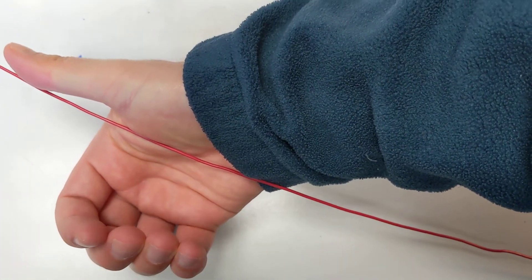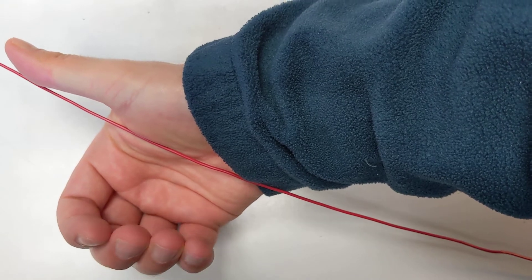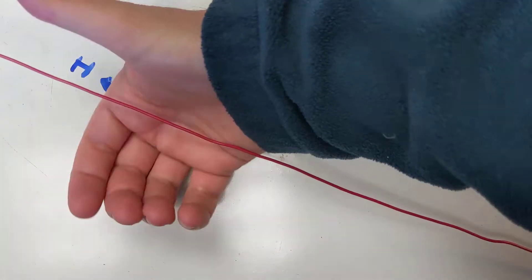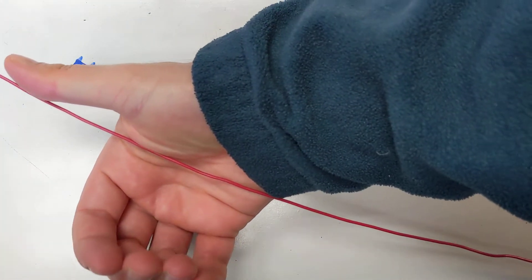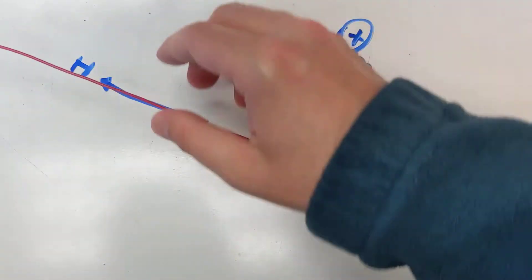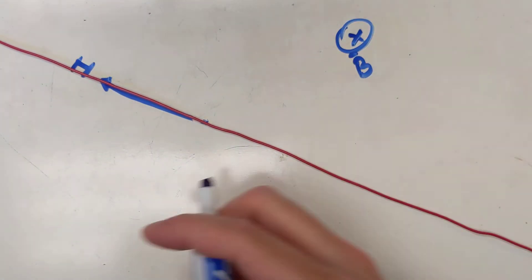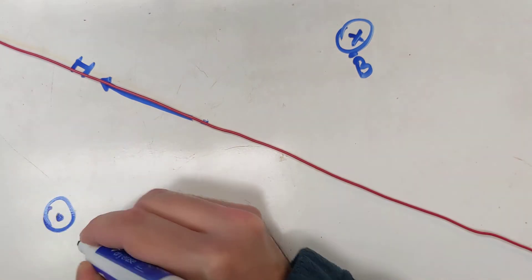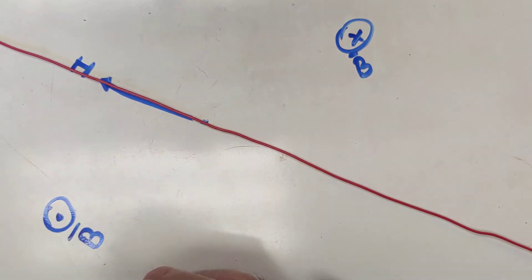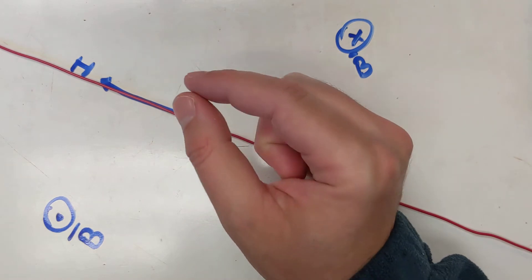I'm wrapping my hand around the current, and at this point my fingers show me a direction that goes out of the page. So the magnetic field here goes out of the page.